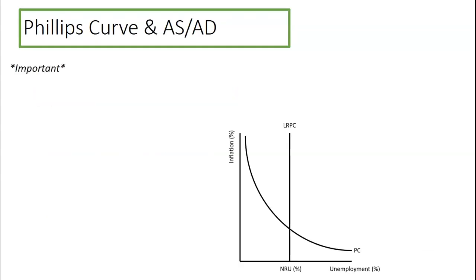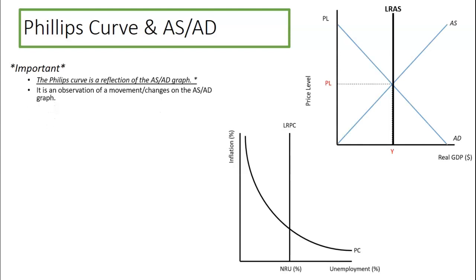Important thing to realize. The Phillips curve is simply a reflection of the ASAD graph. It's an observation of the movements. By itself, it doesn't really do anything. It's just saying, hey, we saw this happen. Let's kind of go through a typical example. So let's assume we're at point A from the ASAD graph, and on the long run Phillips curve. So here we have our A.